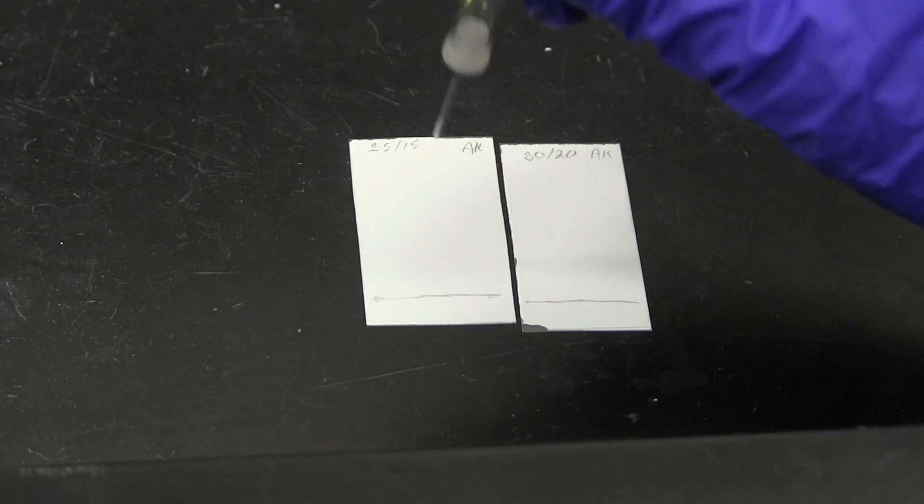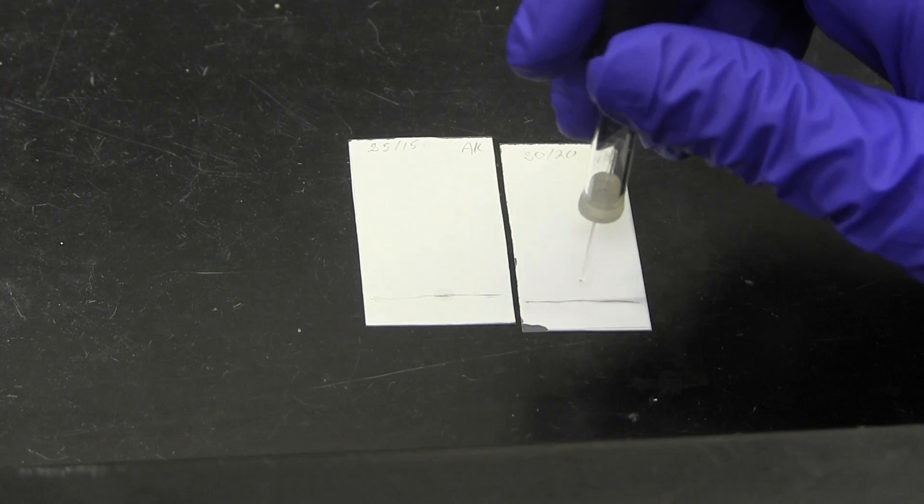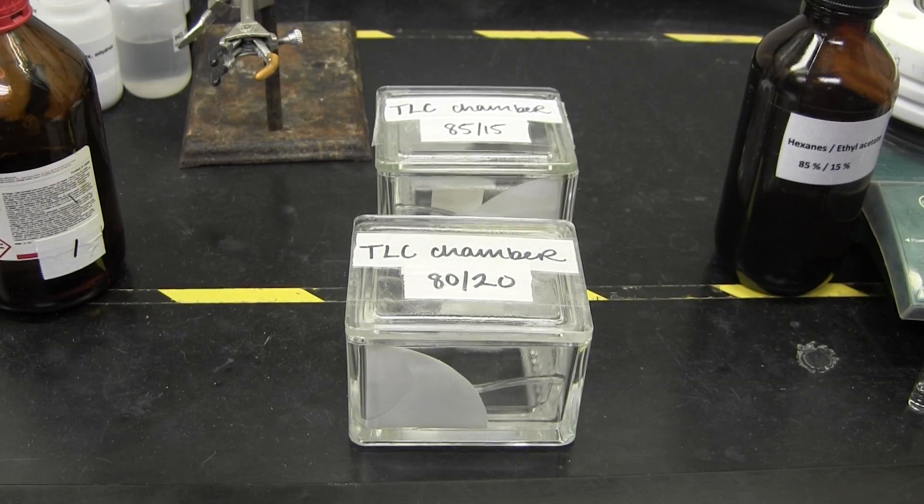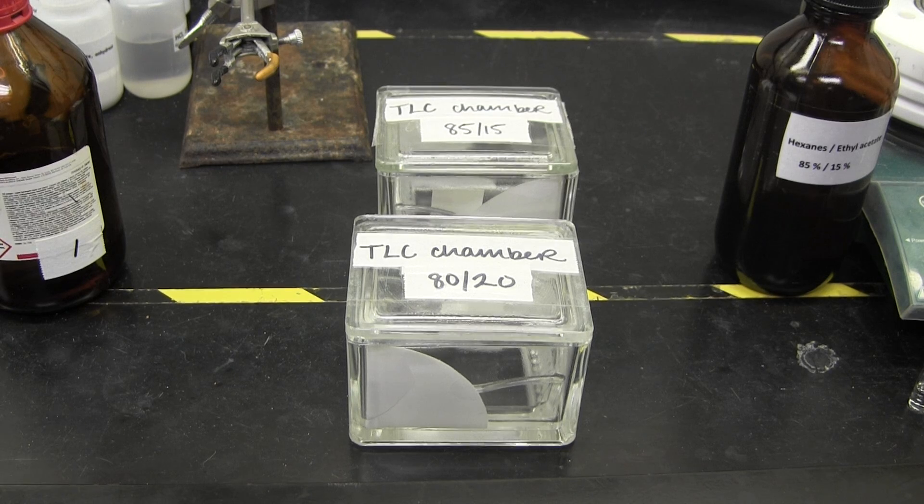Once you start the reaction, you will need to determine a TLC solvent for your unknown. To do this, use the TLC method used in previous labs. You should have saved the drop of your alcohol. Use this to spot on a TLC plate and determine the solvent.